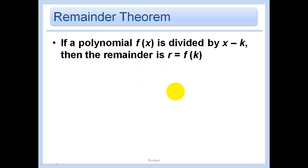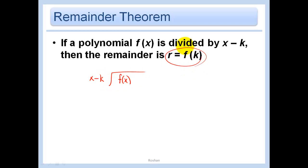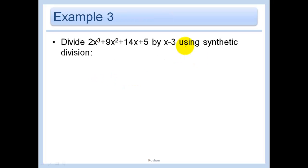In general, if a polynomial f(x) is divided by x minus k, then the remainder r equals f(k). Now let's divide using synthetic division. Honestly, I like synthetic division better — it's much easier than long division — but you can use either method. Remember synthetic substitution from before? It's coming back right now.